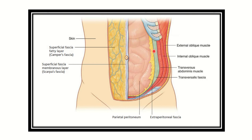To answer the question, let's look at some pictures. Here we can see the abdominal wall and the layers of the abdomen. First is the skin, then superficial fascia — which contains a superficial fatty layer and membranous layer, or Camper's fascia and Scarpa's fascia. Then three important muscles: the external oblique, the internal oblique, and the transversus abdominis muscle. Then we have the transversus fascia, then extraperitoneal fascia.